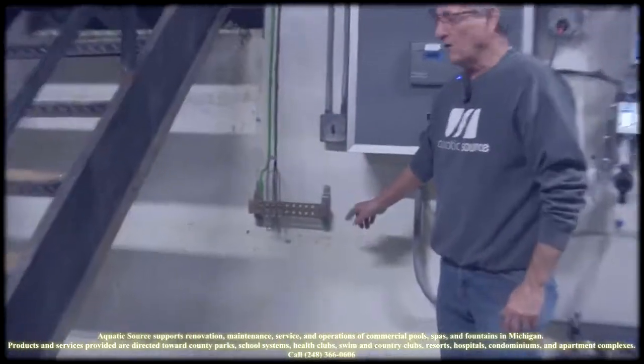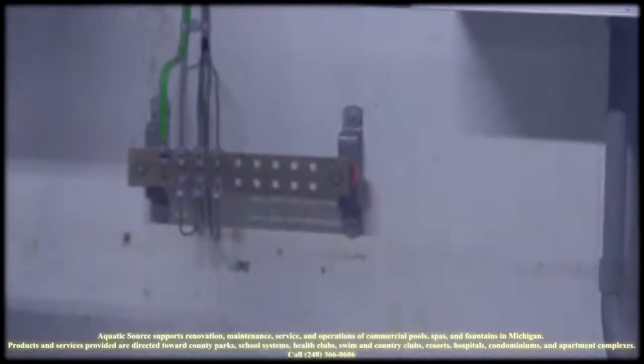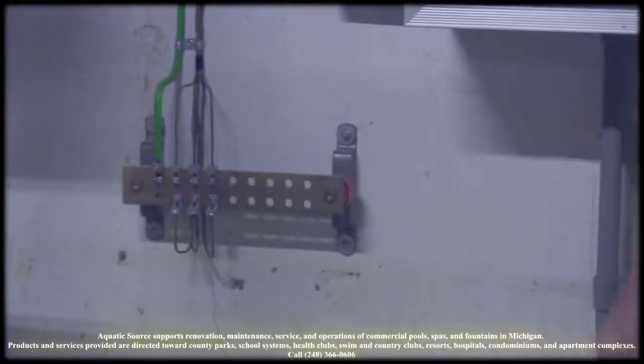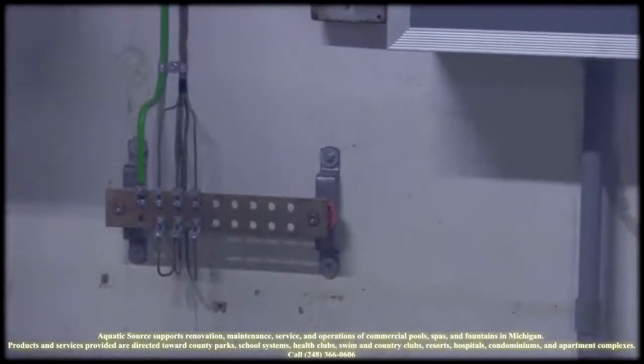What I want to show first is when they redid this equipment room, they put in a ground bar. All the equipment in here comes to this ground bar, which is great for the electronics because of the stray electricity.